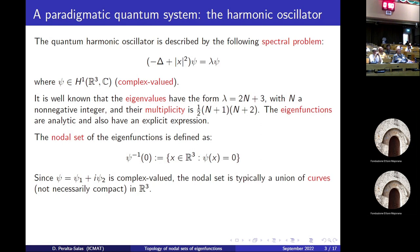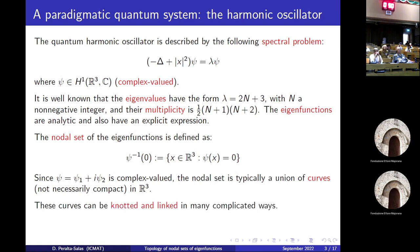Saying that we understand everything about this system is the same as saying that we understand everything about polynomials — they are very explicit. But of course, real or complex algebraic geometry is a theory to try to understand zeros of polynomials. So let's introduce the definition of nodal set: the set of points in space where the function vanishes. Since I'm considering complex-valued functions with real and imaginary parts, the nodal set is typically the intersection of the zero set of the real part and the zero set of the imaginary part — typically it's curves. These curves could be compact or non-compact, and in principle these curves can be knotted and linked in many complicated ways in space.